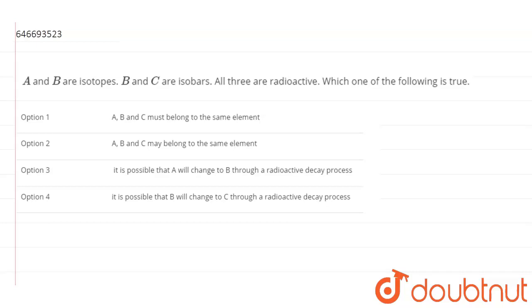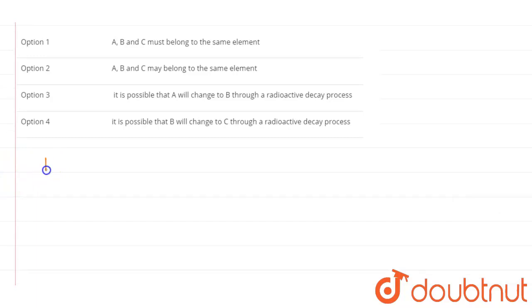So if A and B are isotopes, that means, by definition, isotopes are atoms which have same number of nucleons. Same number of nucleons.